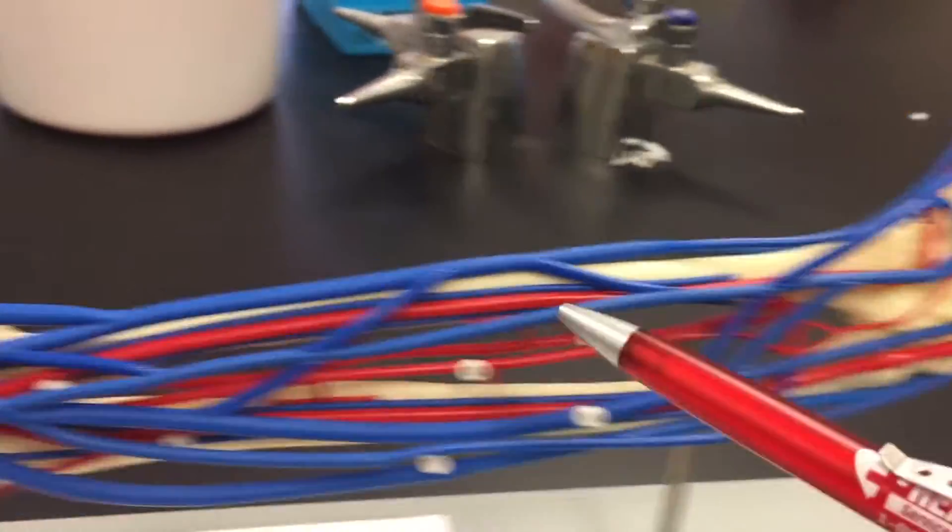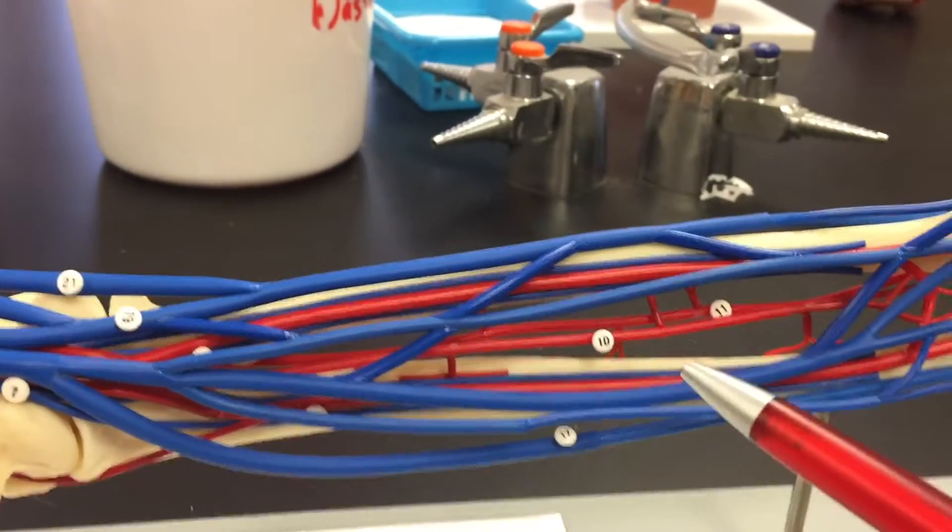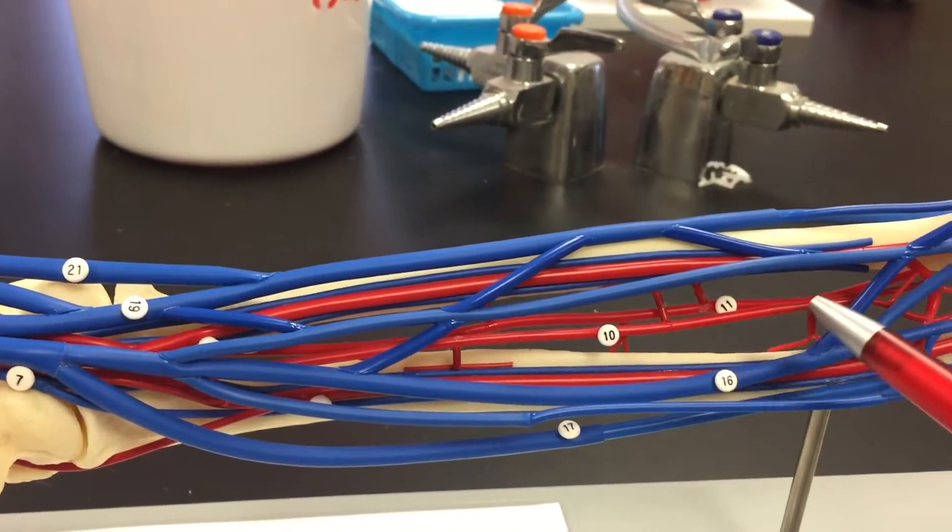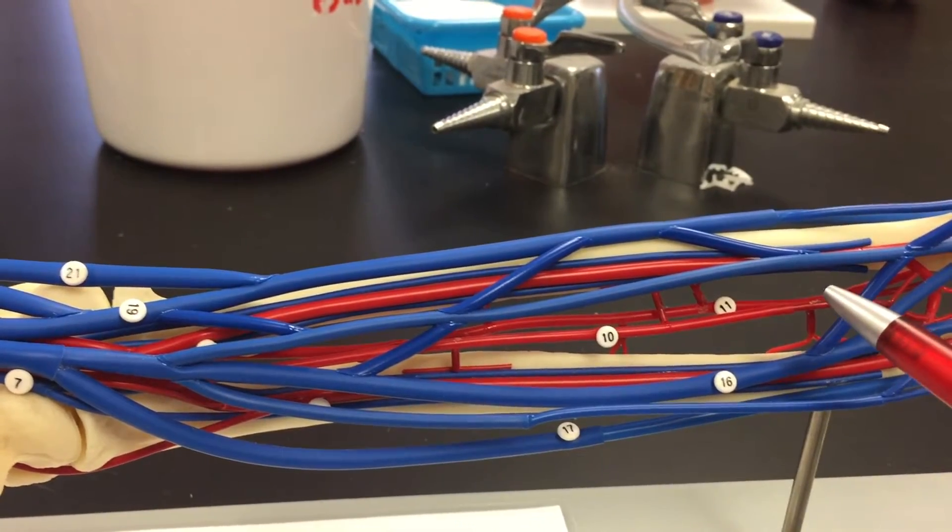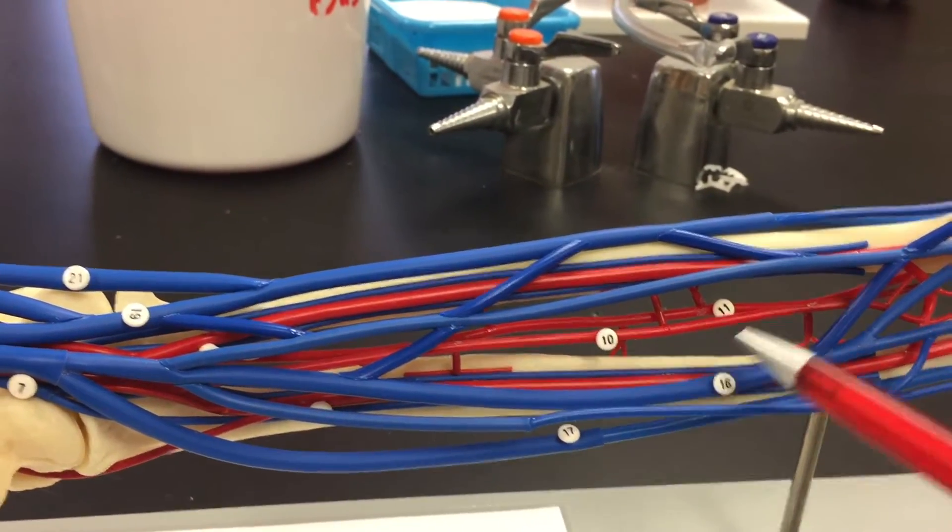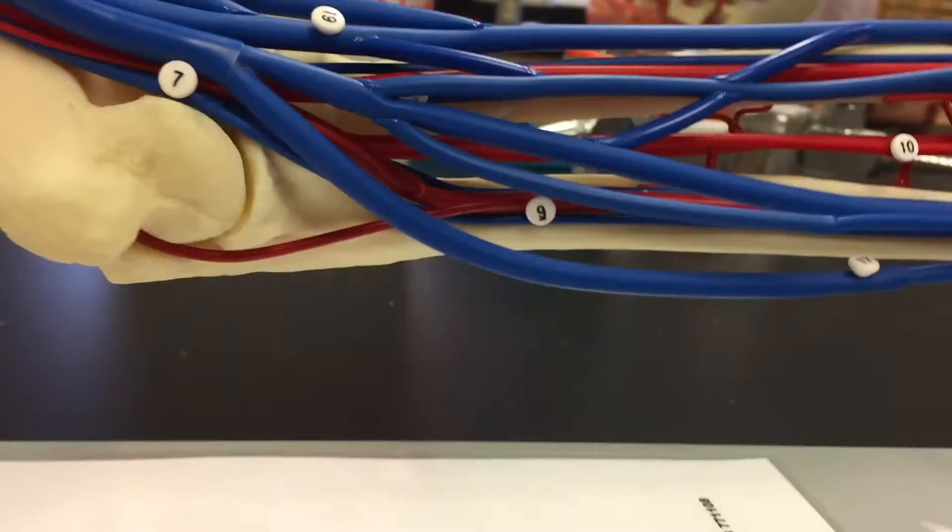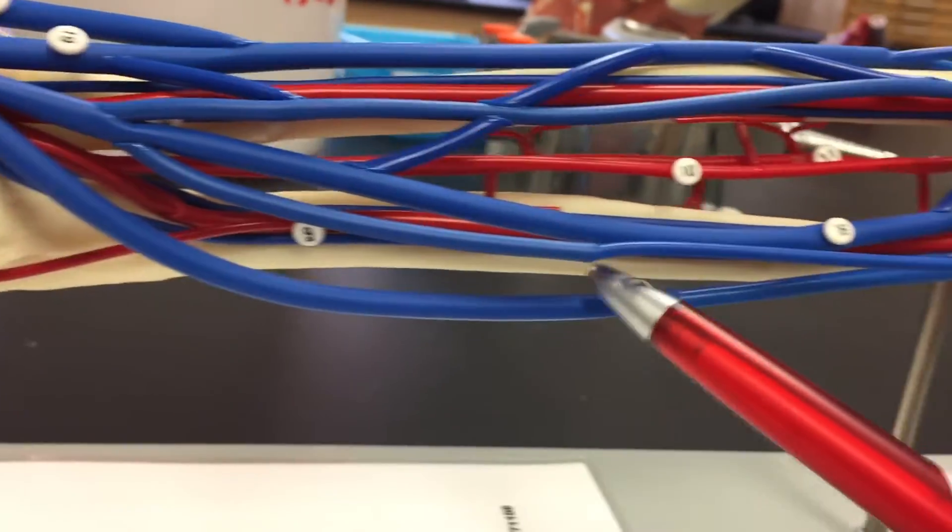...the thumb. This is the radial artery, number ten. This is the common interosseous artery, and number nine follows along...